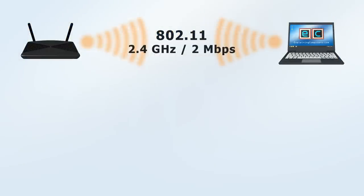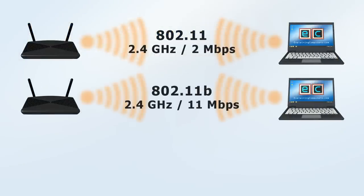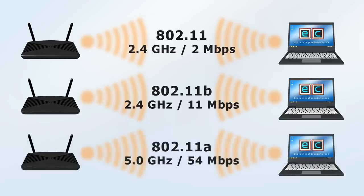802.11b operates in the 2.4 GHz frequency band and increased maximum data transmission speed to 11 megabits per second. Meanwhile, 802.11a operates at 5 GHz and offers speeds of up to 54 megabits per second. However, as 802.11a was more costly to implement, it was 802.11b that proved more popular in the consumer market.